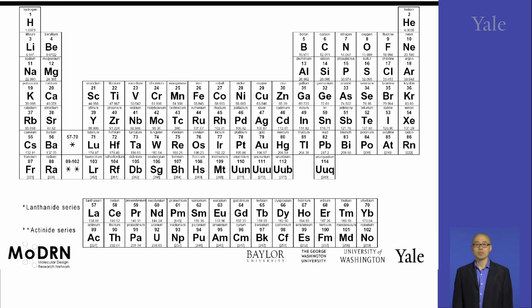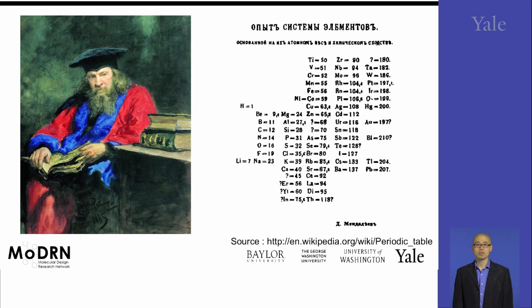The periodic table is a periodic arrangement of chemical elements based on their atomic number and electronic configurations. It was first proposed by a Russian chemist named Mendeleev in 1869.